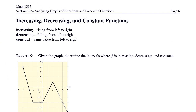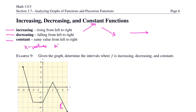Finally, let's look at increasing, decreasing, and constant functions. A function is increasing if it is rising from left to right, decreasing if it is falling from left to right, and constant if it is the same value from left to right. When we ask about increasing and decreasing, we are interested in the x values, and we write these as open intervals.